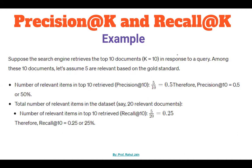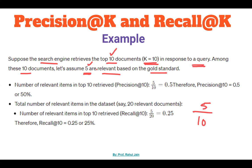Let's say we have a search engine and we need to retrieve the top 10 documents — K is 10 here — in response to a query. Among these top 10 documents, let's assume 5 are relevant based on the gold standard. So what is Precision? Precision is 5 divided by 10, because the search engine retrieved top 10 documents and out of these 5 were relevant to our gold standard. So Precision@10 is 0.5, that is 50 percent accuracy.